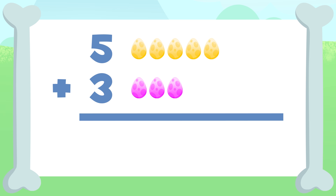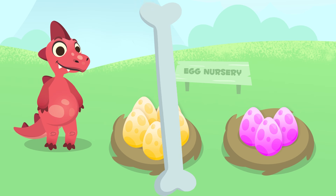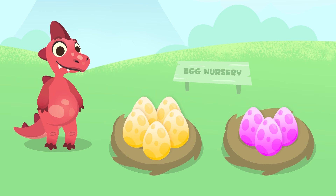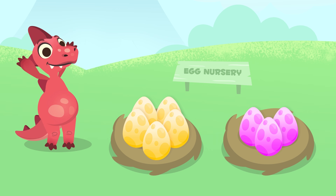So the result is: one, two, three, four, five, six, seven, and eight. We have eight eggs. Five plus three equals eight. Well done Dino! Today you need to look after eight dinosaur eggs. Now you know how to add up!